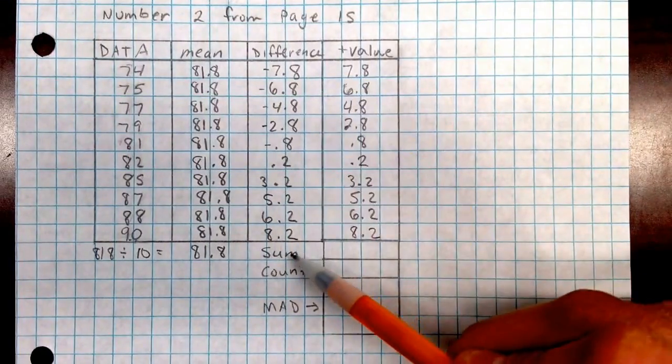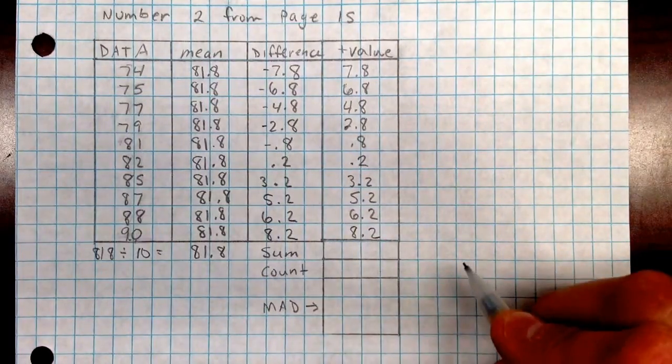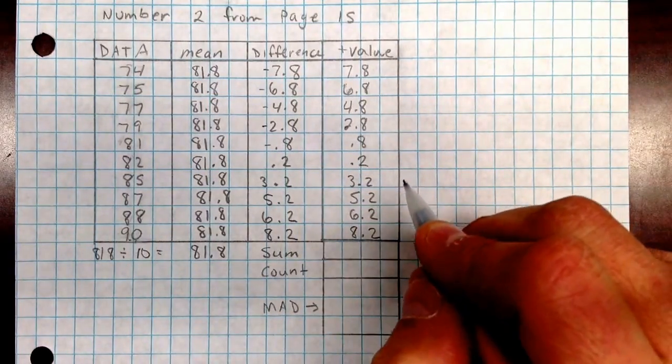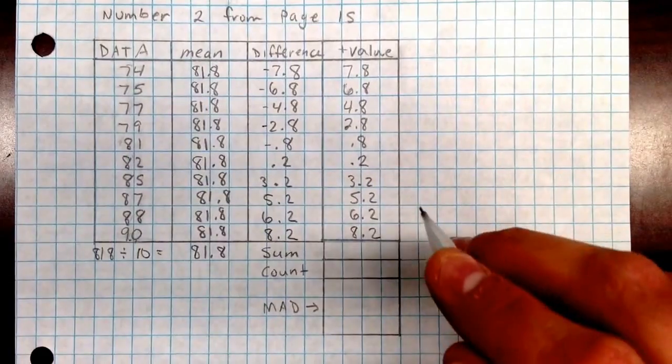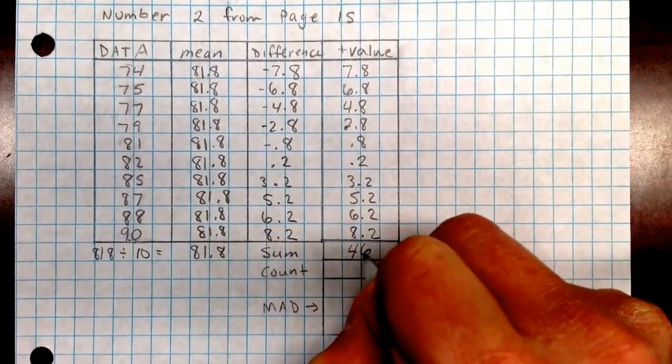Then find the sum of those, so that we have the sum labeled right here. This is the sum of all these. So again, add those all up. And if you want, you should pause this for a minute because I'm going to put the answer down right now. Pause it and then check after. I got 46.